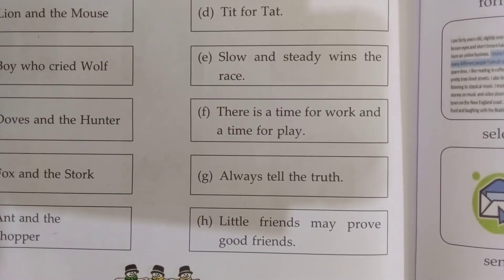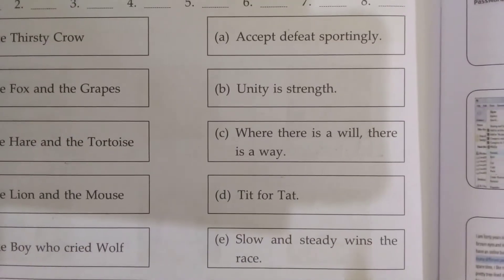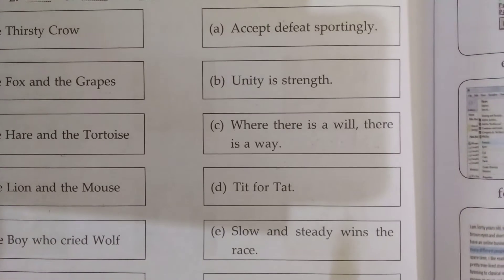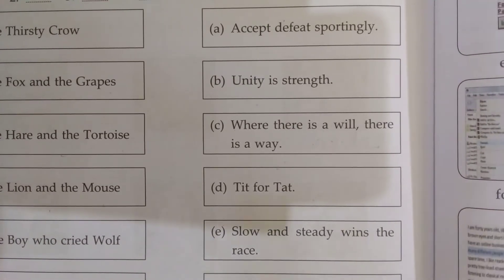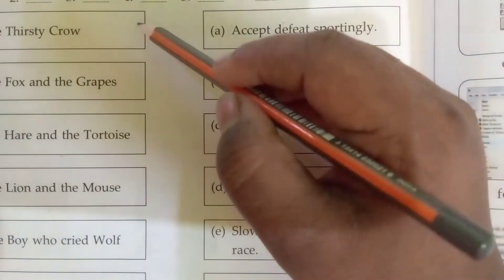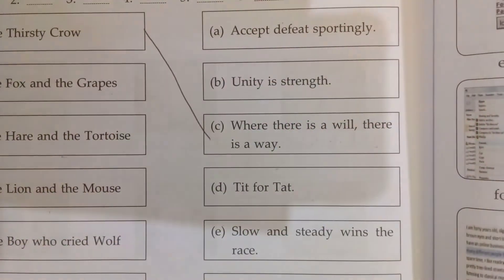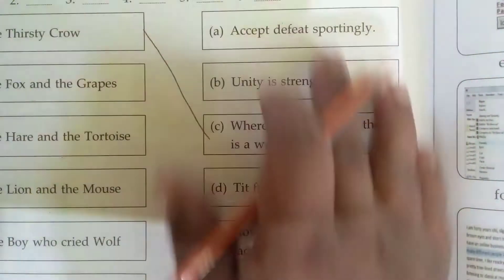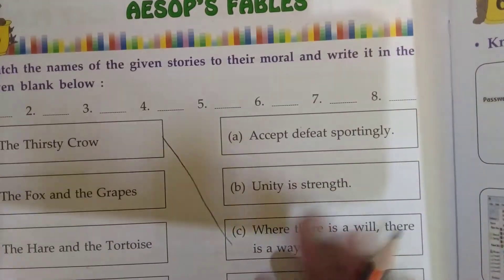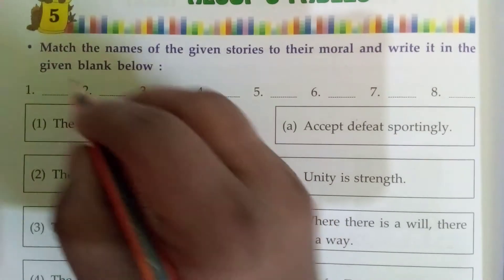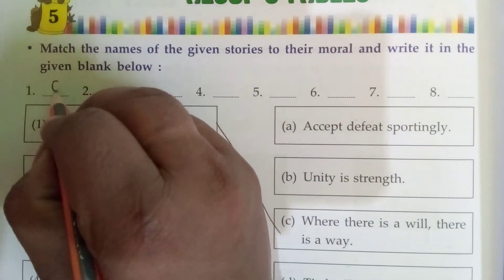Now, The Thirsty Crow — the moral is 'Where there is a will, there is a way.' For the first one, we will write C.